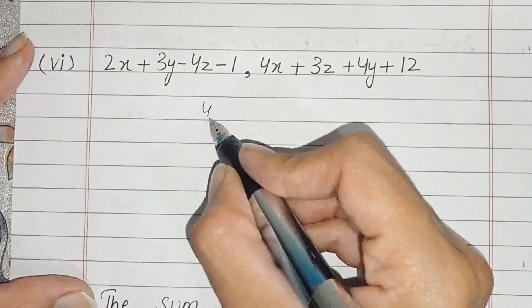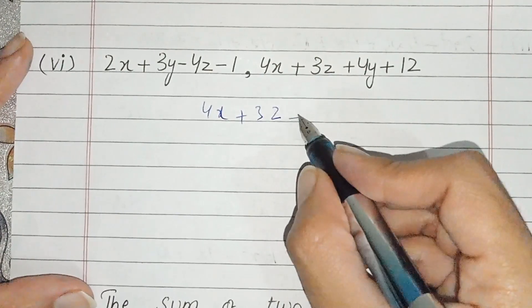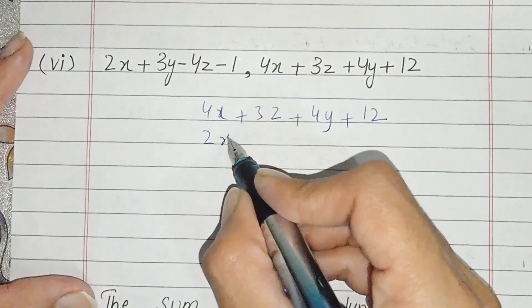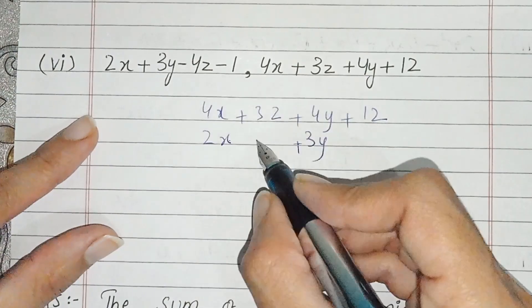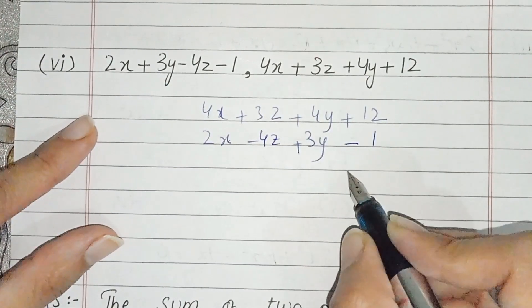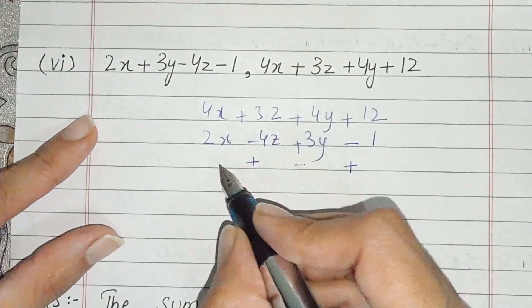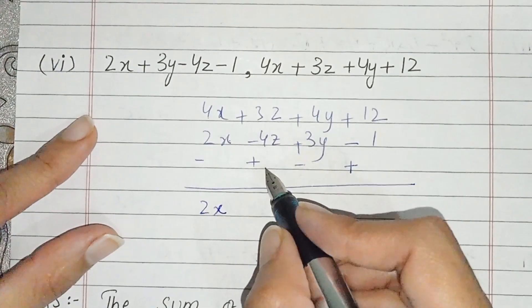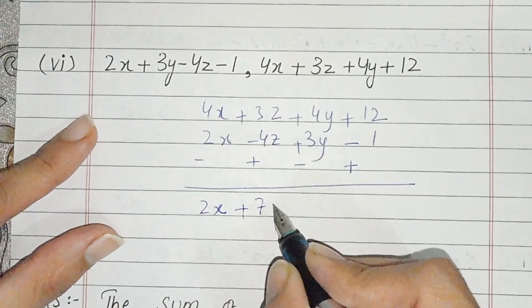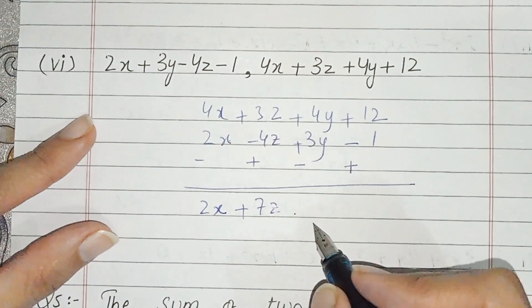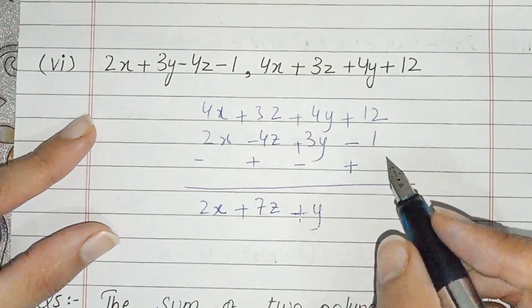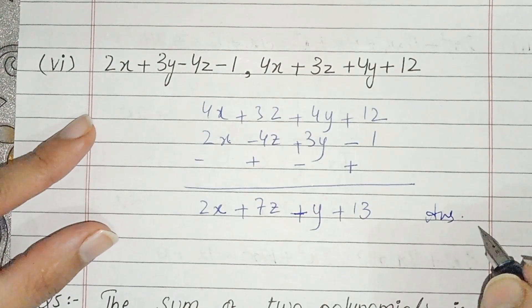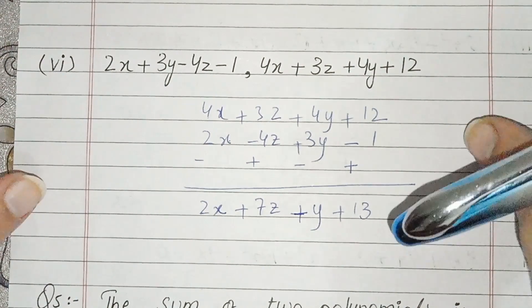Now students part number 6. We will write: 2x plus 4y plus 3z plus 4y plus 12. Like terms: 2x, 3y, 3y and z minus 4z and minus 1. We will change the sign: plus, minus, plus and minus. 4 plus 2, 6 minus, we get 2x. 4, 5, 6, 7 plus 7z. 4, 3 minus, we get plus y. And 12, 1, 13. And this is the answer of part number 6. Now it's solved.